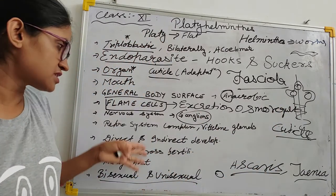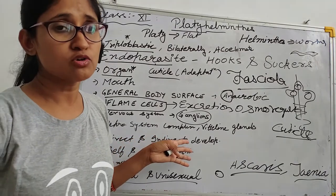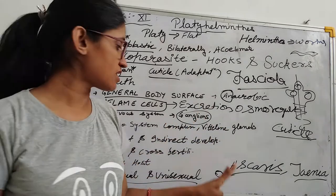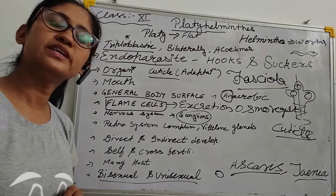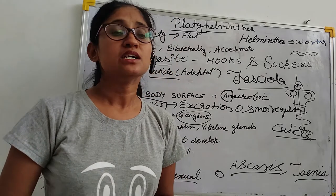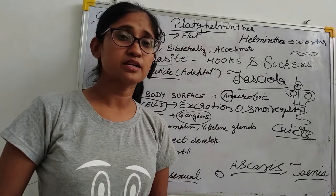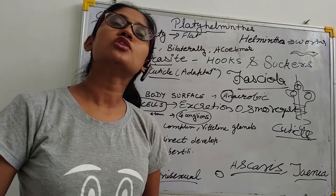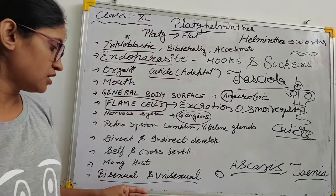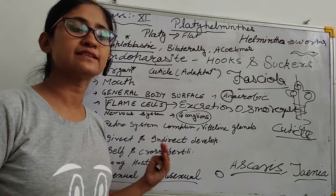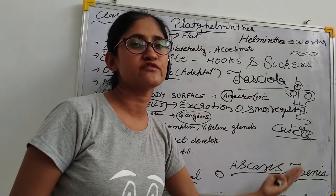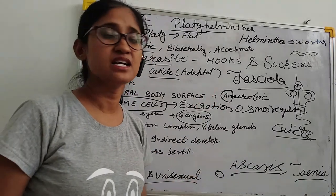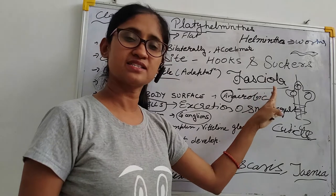A nervous system with neurons is present. Animals can be unisexual or bisexual. Cross-fertilization and self-fertilization are performed. Examples are Scaris, Taenia, and Fasciola.